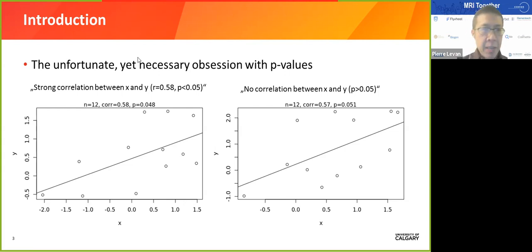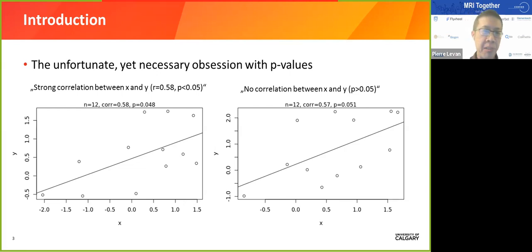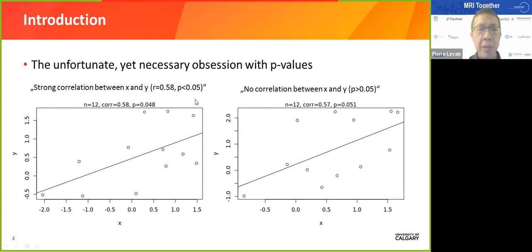But it could just as well have been that you had slightly different data and gotten something like the plot on the right: the same number of data points, a correlation of 0.57 — just slightly below the previous one — and unfortunately a p-value of 0.051, not significant. You might conclude there's no correlation because your p is above 0.05. In fact, those two datasets are pretty much the same and represent the same conclusion, yet you reach completely different results.